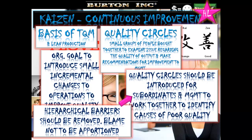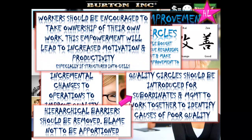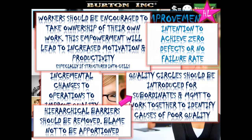Hierarchical barriers should be removed and blame should not be apportioned. If a worker spots a flaw in their line, when they go to see senior management there should be no blame — they should be congratulated and praised. Workers are encouraged to take ownership of their own work, which is empowering, and this empowerment leads to increased motivation and productivity. In Kaizen, the overall goal is to achieve zero defects — no failures and no failure rate.